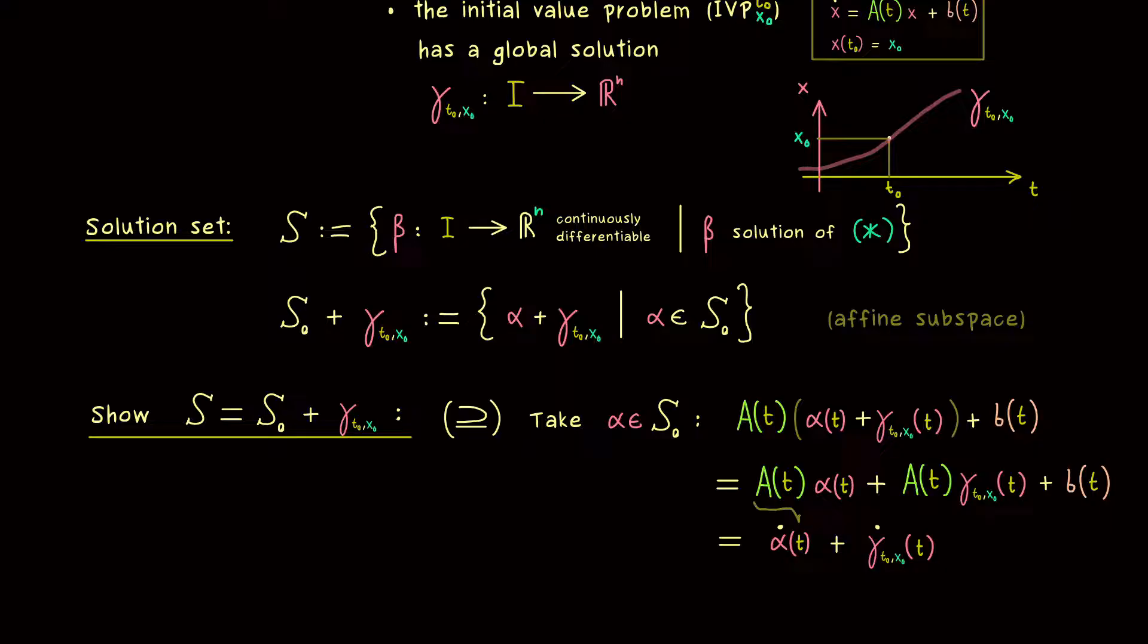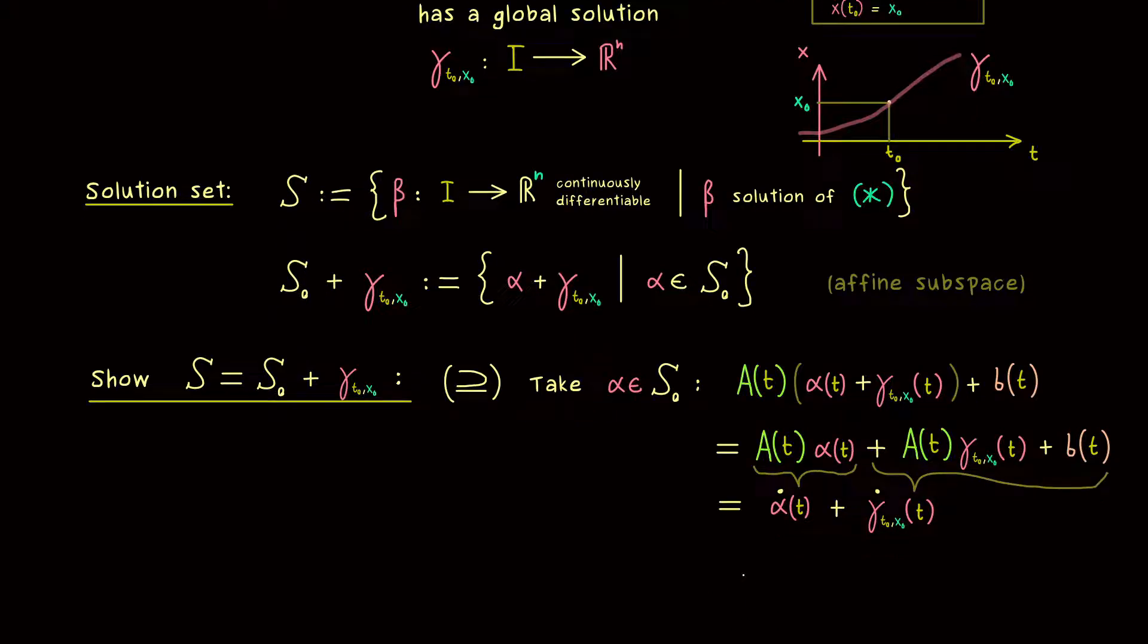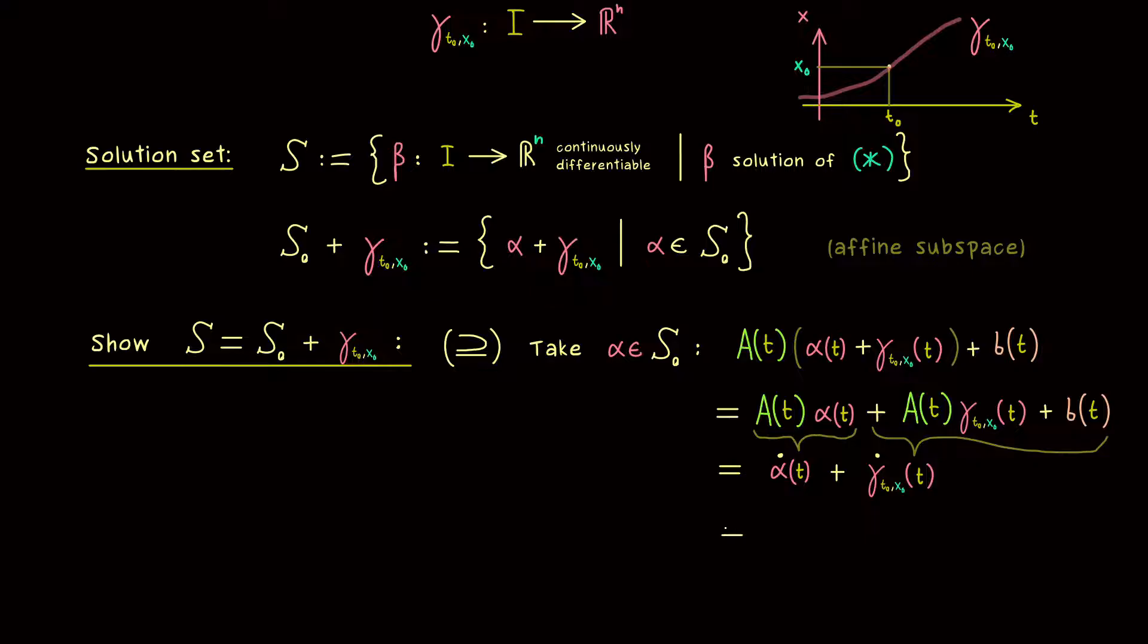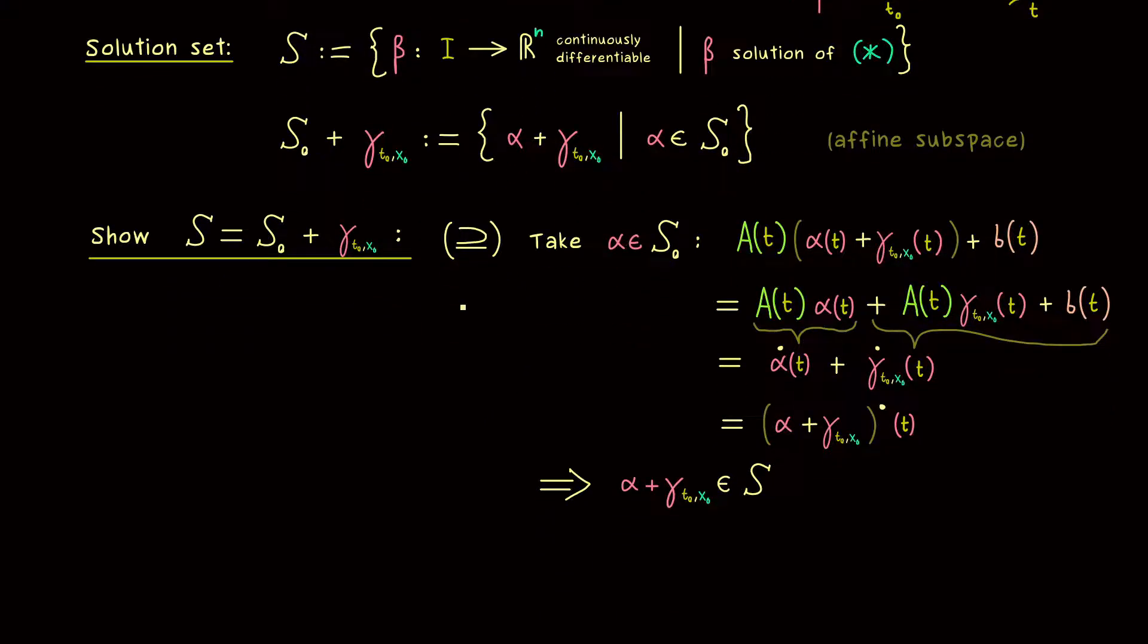So that's all what happens. One part goes to alpha dot and the two parts at the end go to gamma dot. And now obviously we can write that with a single dot. Namely it's the derivative of the two functions added. So in the end what we see is that alpha plus gamma solves our system star. Hence the conclusion is that the function alpha plus gamma also lies in our set S. And this shows the first inclusion we have for the two sets.